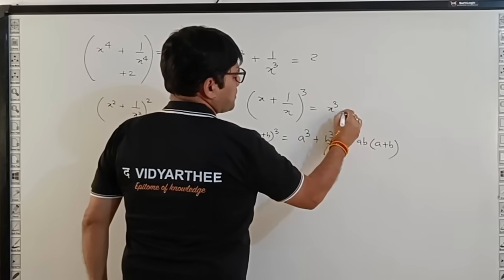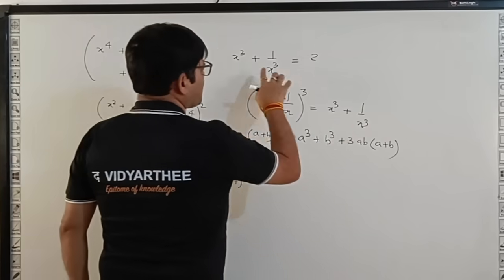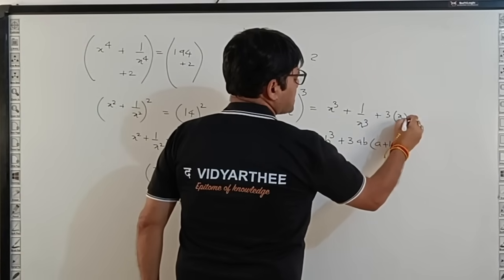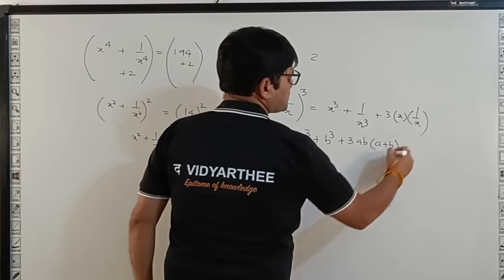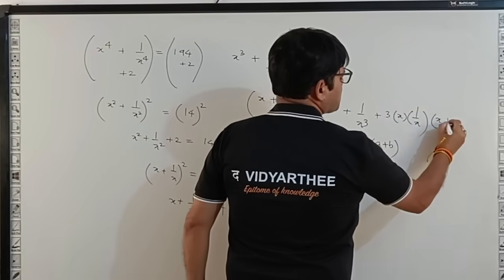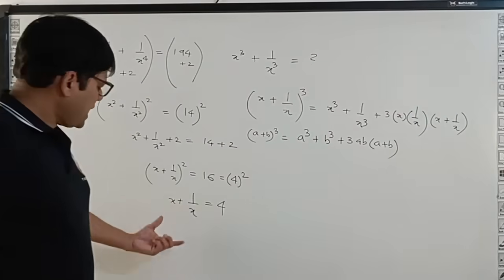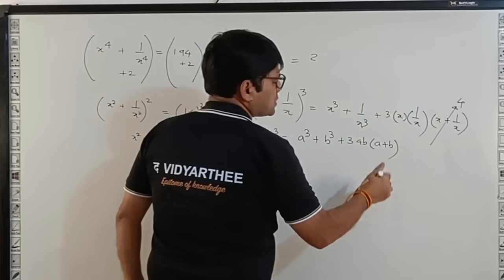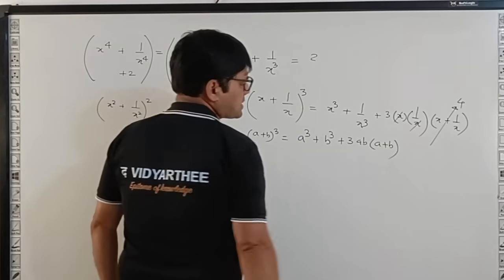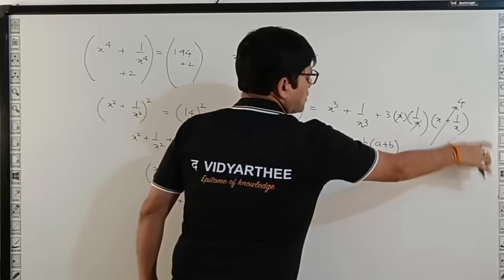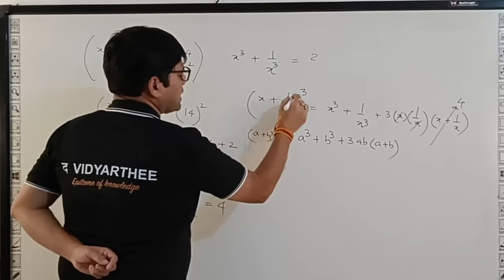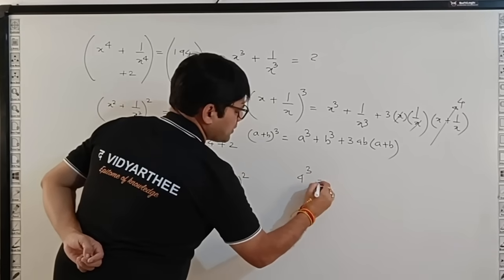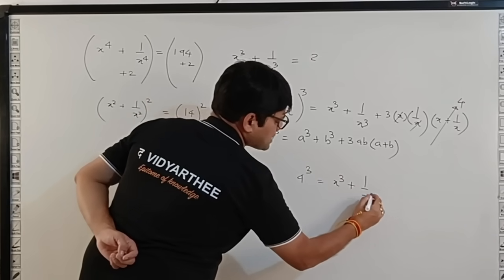This is x^3 + 1/x^3 - part of your question is already there - plus 3 times ab, that is x × 1/x multiplied by (x + 1/x). You know that x + 1/x = 4, so you can replace this by 4. Now x times x cancel out, you have 3 × 4 = 12. So what I'm getting is left-hand side cube, which means 4^3 = x^3 + 1/x^3 + 12.